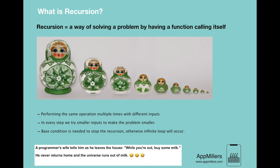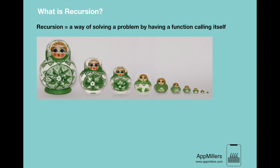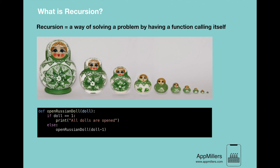Let's convert this Russian doll example into code so we can express it in computer science. Our code for this Russian doll example will look like this. Here we provide a base condition for when the doll equals one — the smallest one which cannot be opened. Otherwise, every time we are calling the same function with one smaller doll and opening each doll.